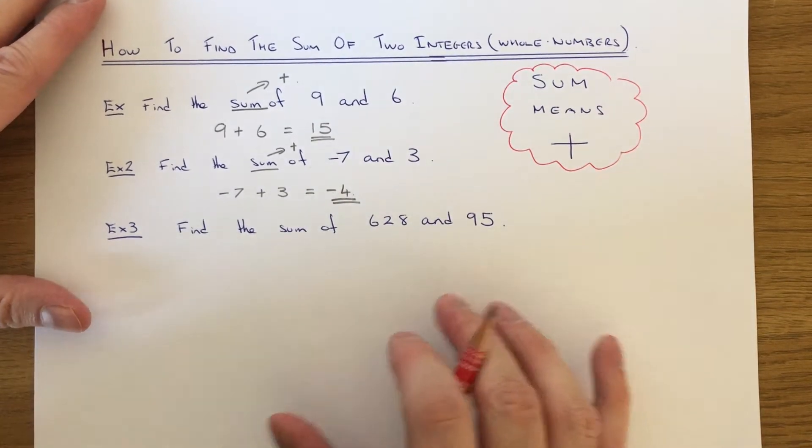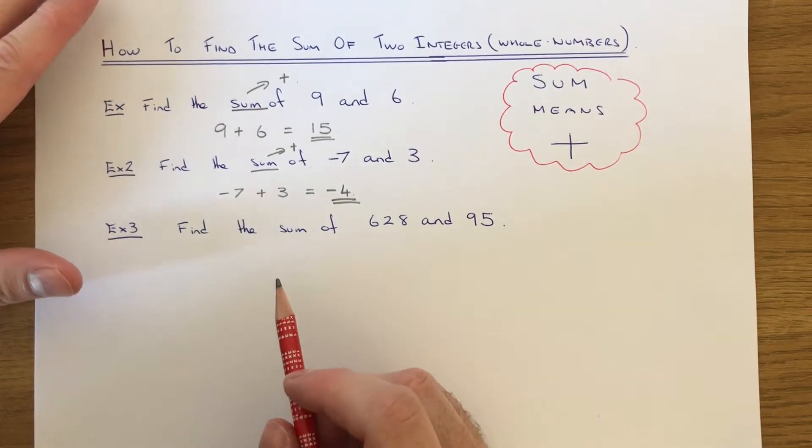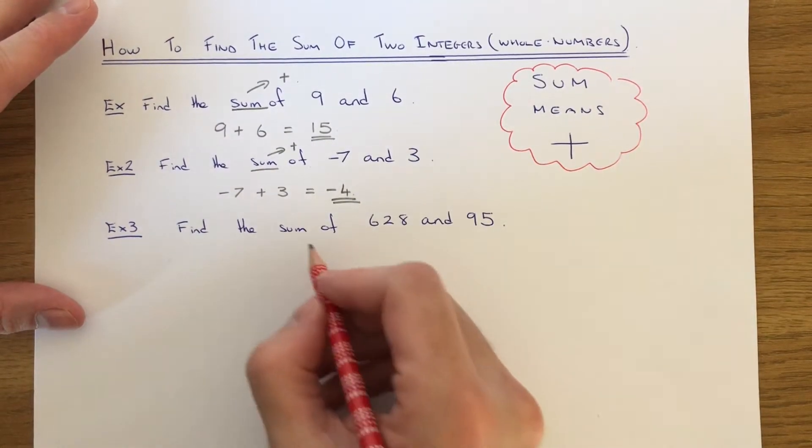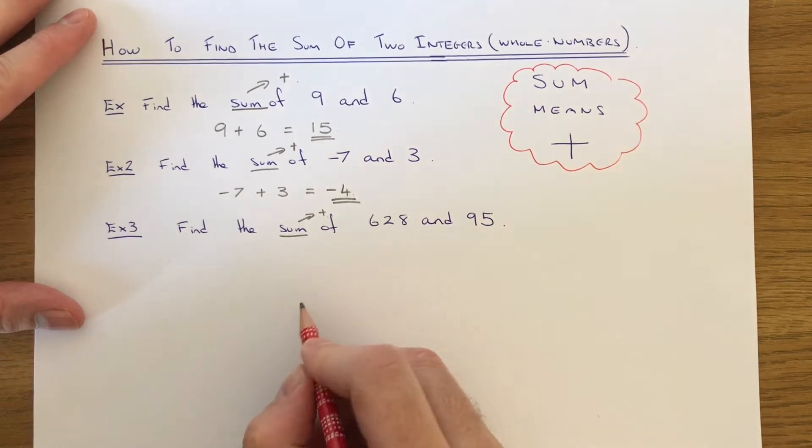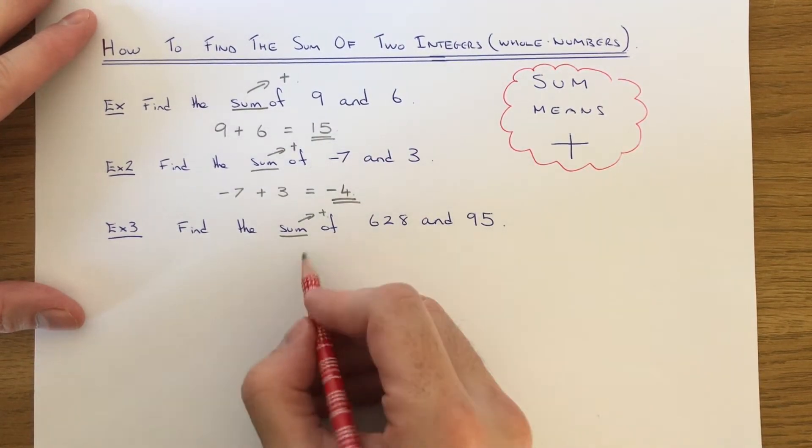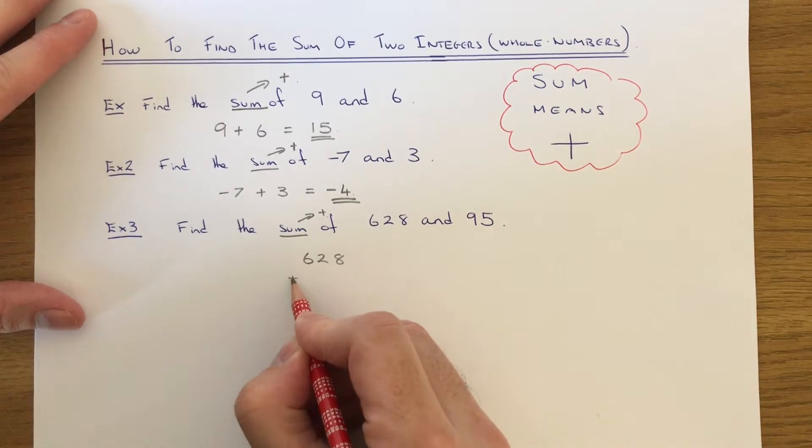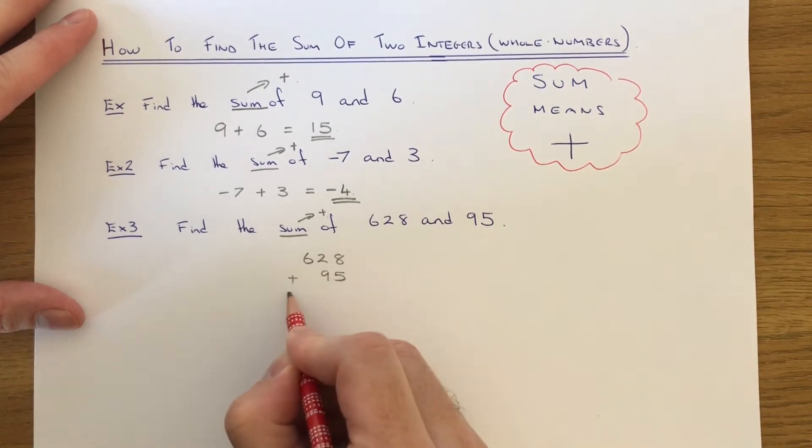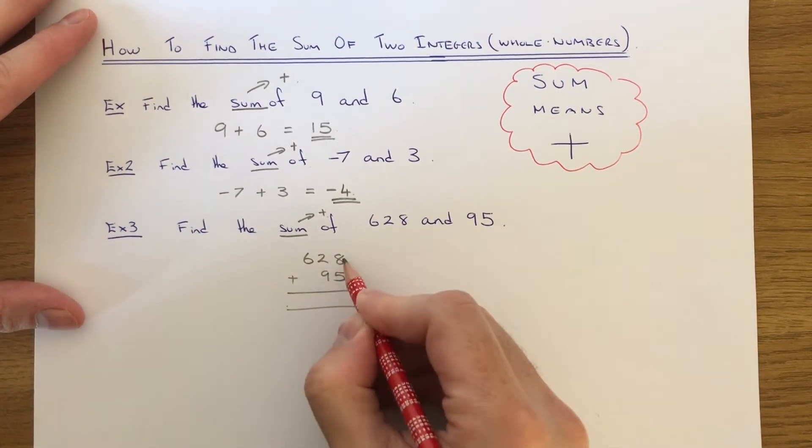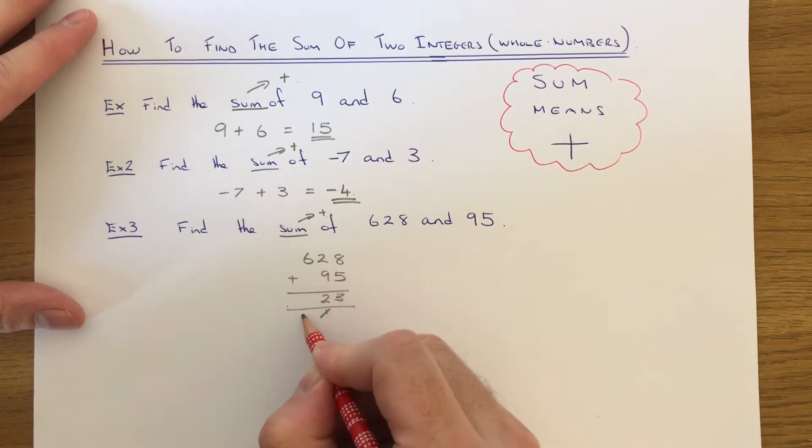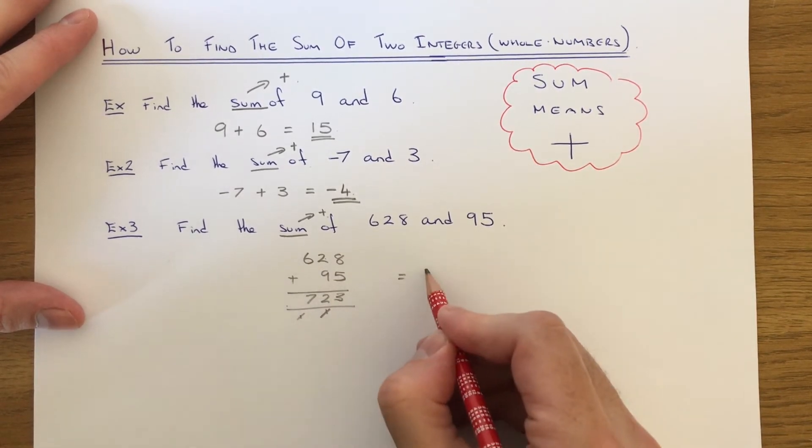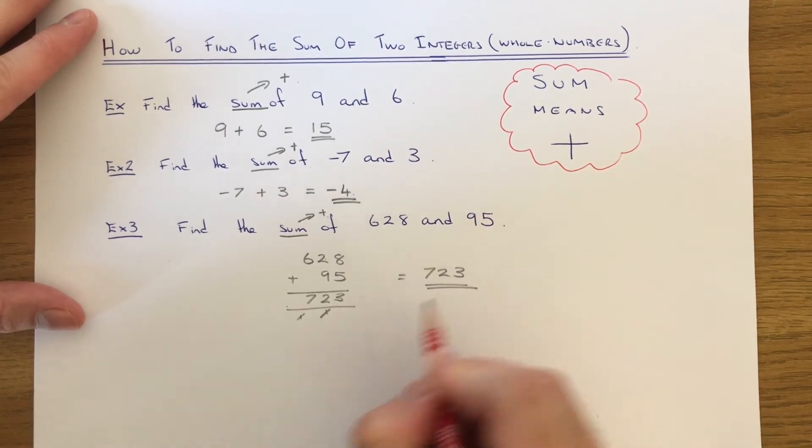Example three then. This time we've got to find the sum of 628 and 95. Again, sum means we need to add the numbers together. It's probably best to do this one in columns. So 8 add 5 is 13. 9 add 2 is 11 plus the 1 is 12. 6 add the 1 is 7. So the sum is 723.